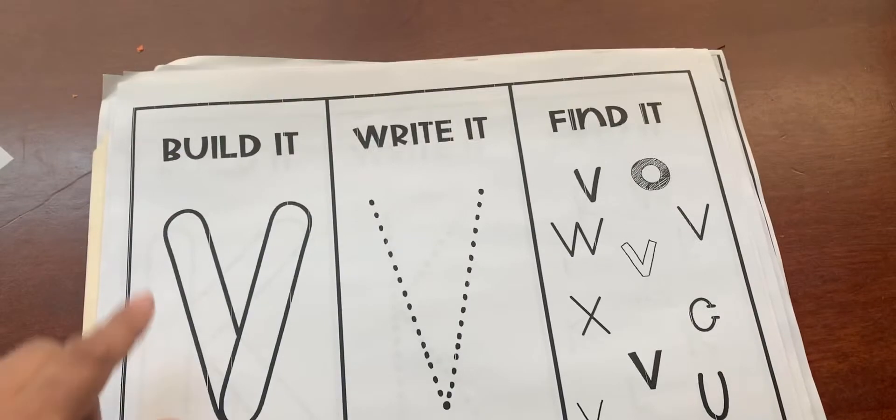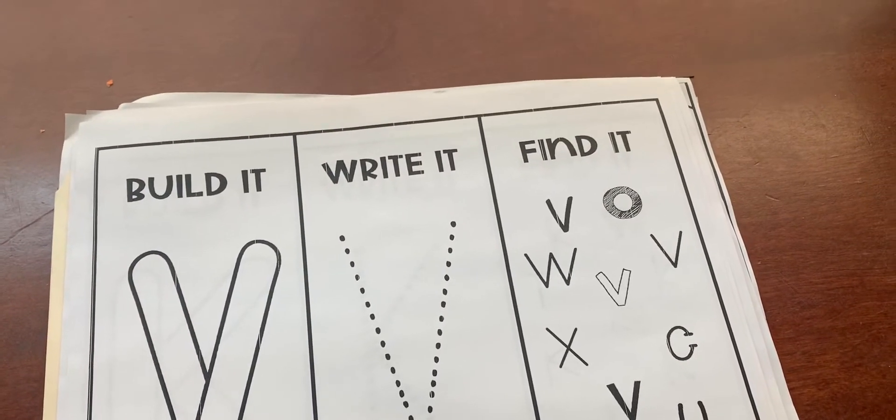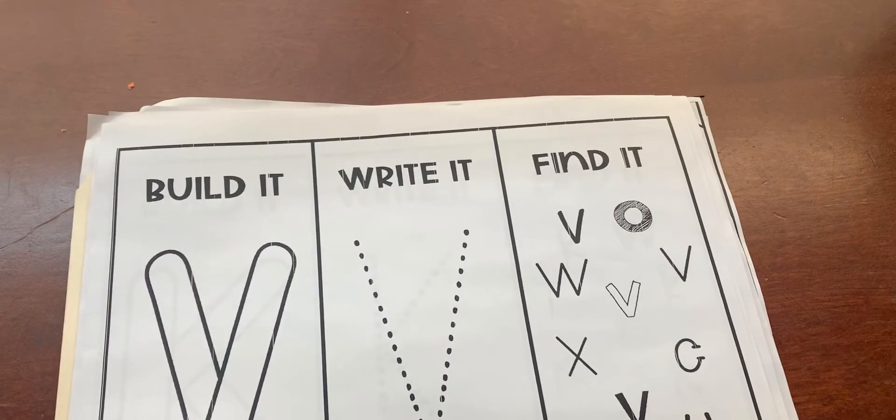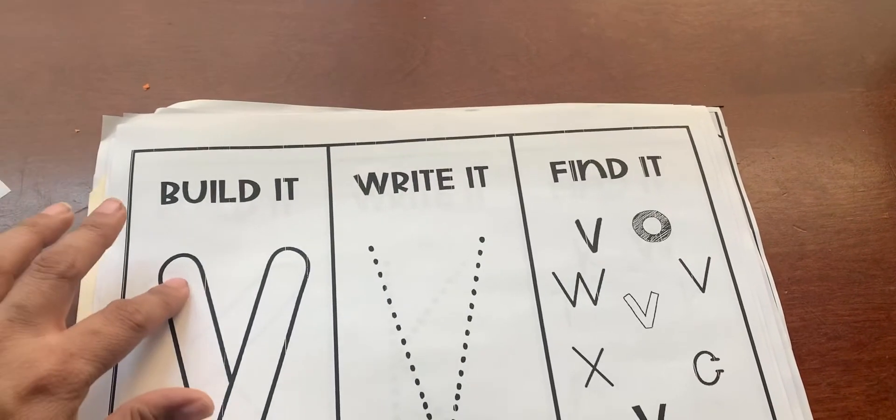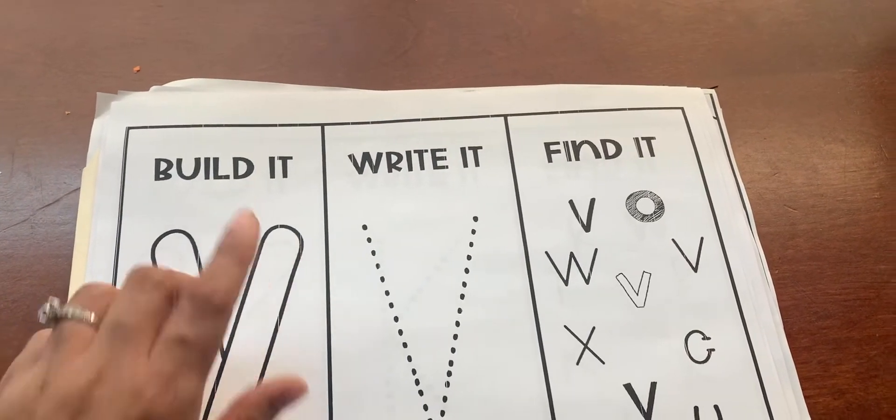And then you're going to either have them roll out Play-Doh and roll a line out here. And then connect it or they can use Q-tips, stickers, however they want to build the letter V. They're just going to build it.